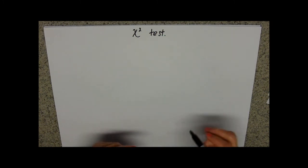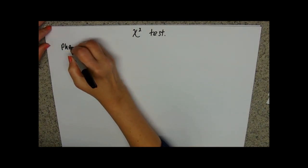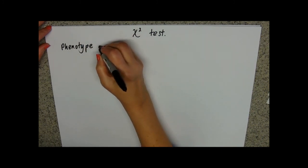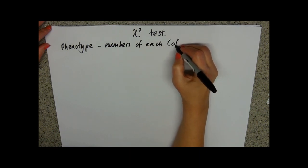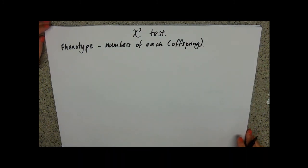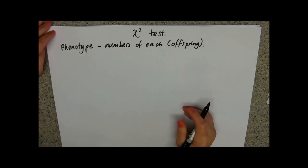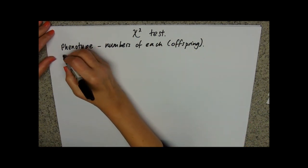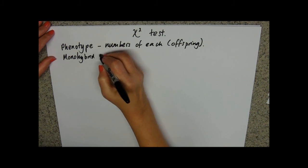So what categorical data do we have in inheritance? The categorical data we've got is the phenotype — that's your category — and the numbers of each. We're talking of course about the offspring, so you'd be looking at a cross that has been done and the numbers of each type of phenotype. You then work out what sort of inheritance you're dealing with — whether you're looking at monohybrid or dihybrid.